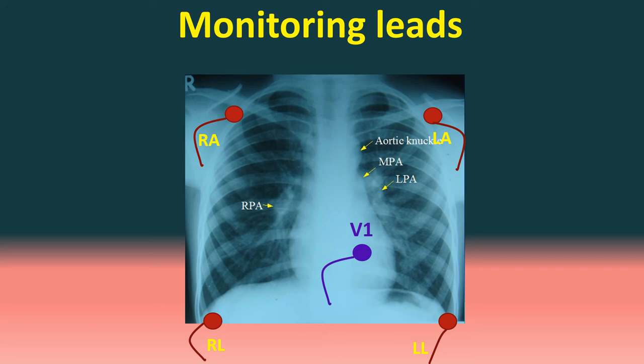The location of leads depends on the type of patient. While anterior locations are available in the coronary care patient, a surgical patient may require different locations depending on the location of the surgical incision and dressings. Esophageal leads may be used in some rare situations to decipher difficult arrhythmias.